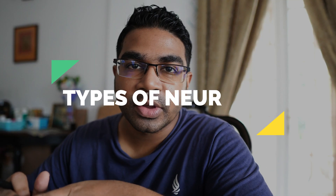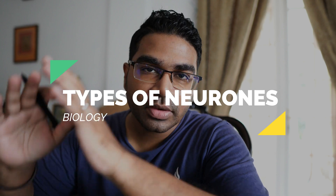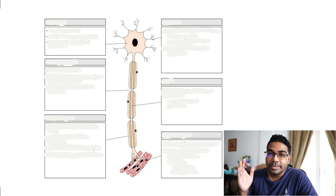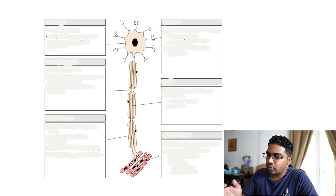In this video, we'll be learning about the types of neurons. First, let's look at the general parts and functions of a neuron. When studying the structures and functions of a neuron, typically a motor neuron is shown.